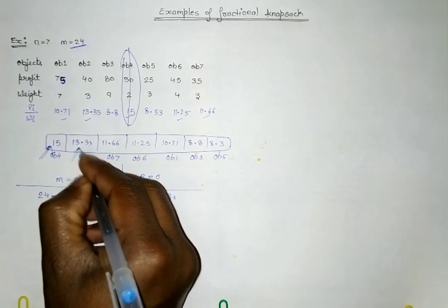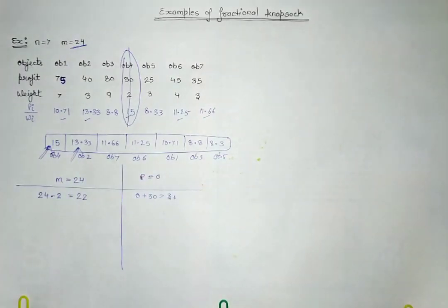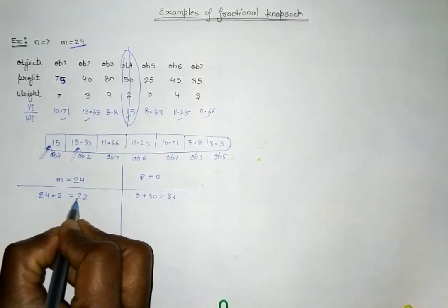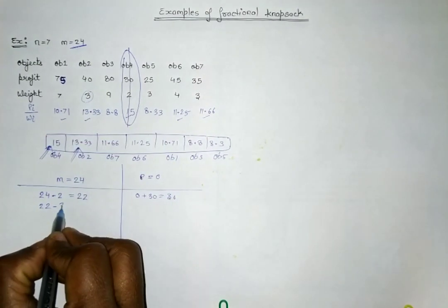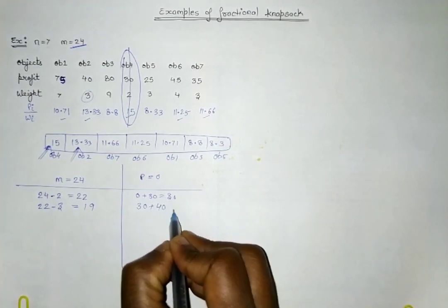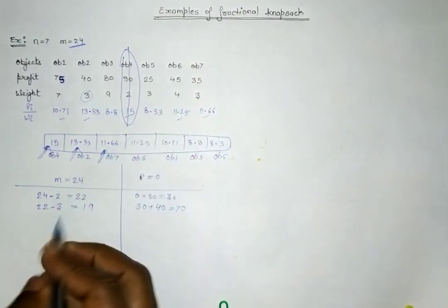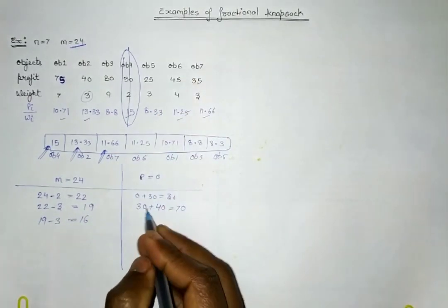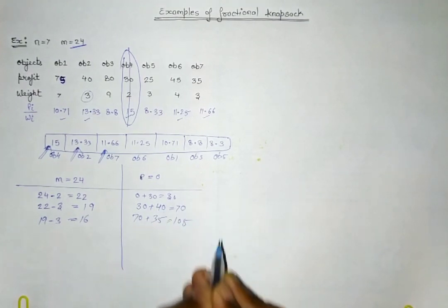Next in the sorted sequence is 13.33, which is Object 2. Remaining capacity 22 minus weight 3 equals 19. Profit becomes 30 plus 40 equals 70. Then 11.66, which is Object 7, weight is 3. So 19 minus 3 equals 16, and profit becomes 70 plus 35 equals 105.